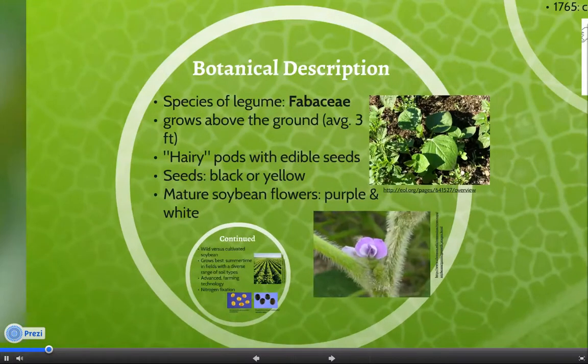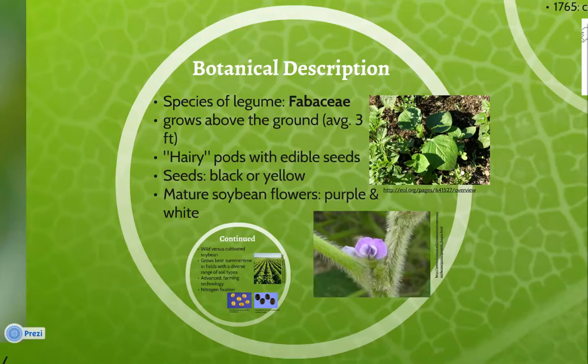The soybean is a species of legume belonging to the family Fabaceae. It grows above the ground and on average it reaches about 3 feet in height. The stem and pods are covered in thin hairs. Pods are most commonly brown, and the edible seeds they contain can range from yellow to black.